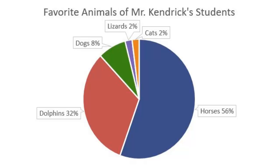Pie charts are best when you'd like to emphasize one especially big value or one especially small value. This chart would be great for showing that a lot of students like horses, or for calling out that my hypothesis was wrong if I thought that most students would prefer dogs.